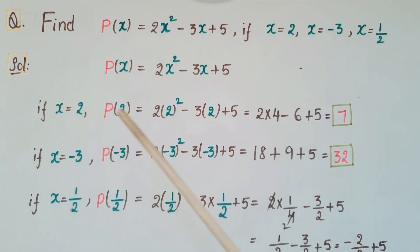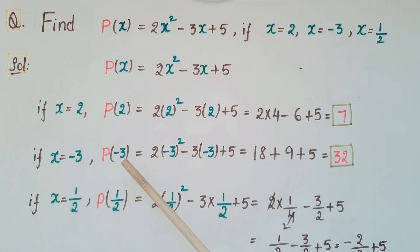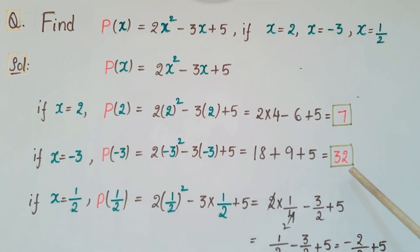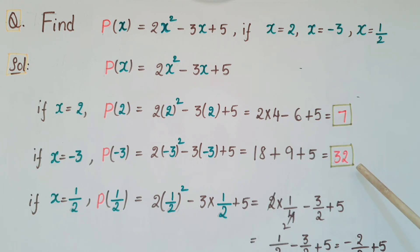Same like that, if x is equal to -3, then p(-3) = 32. So here the value of the polynomial is 32.